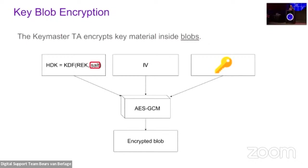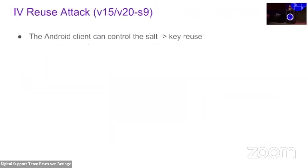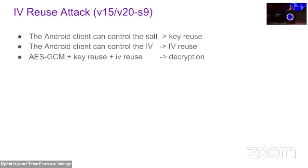We saw that Samsung used SHA digest for the salt in the key derivation with three main variations. In the first variation, they use a constant string with attacker-controlled application ID and application data. The second variation on Galaxy S9 also binds the bootloader state, which is constant for our discussion. Only in the third variation did Samsung get 16 bytes of randomness that change the derived key every time. In the first two variations the salt is attacker-controlled, so we can have key reuse. To our surprise, we also discovered that the Android client can set the encryption IV, which leads to an IV reuse attack.